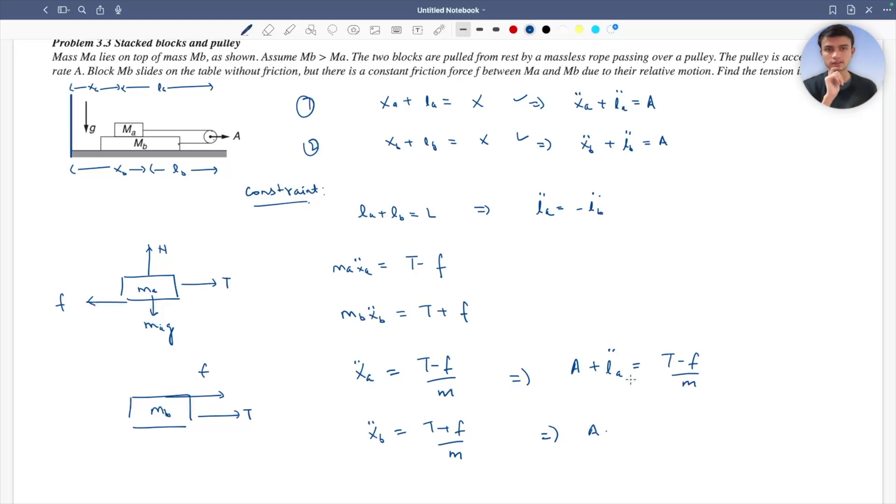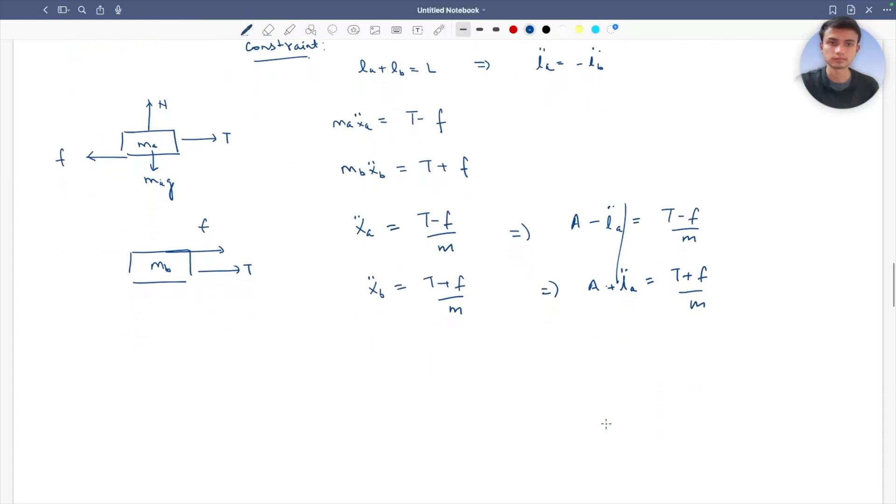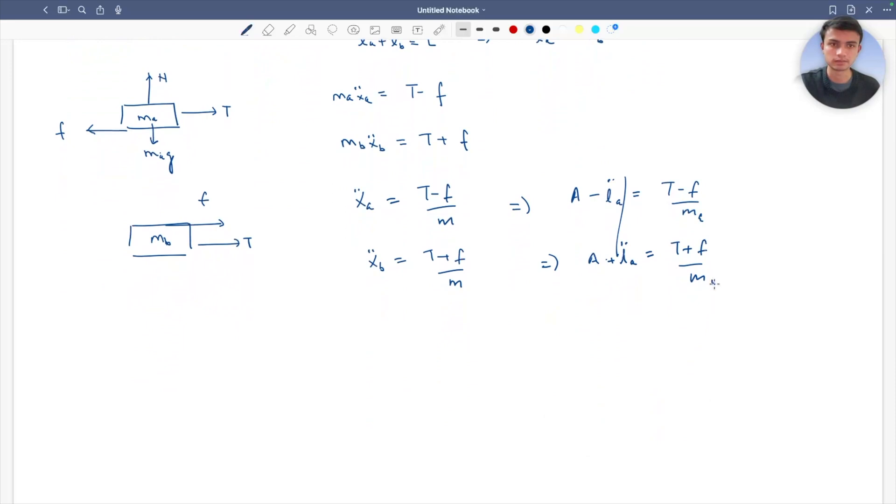And A plus la double dot equals tension plus f over mb. Let's add these two. Two times acceleration is tension over ma plus tension over mb minus f over ma plus f over mb.